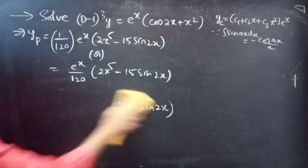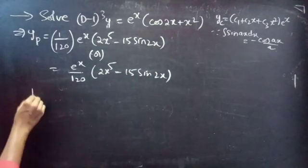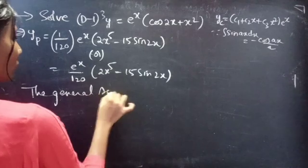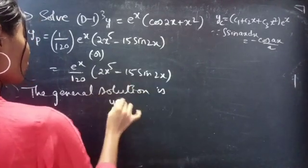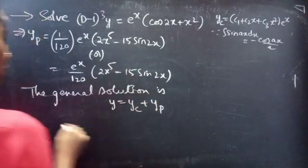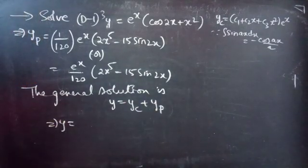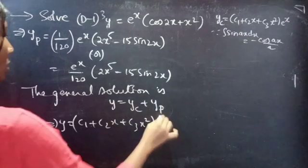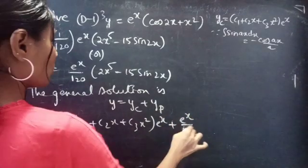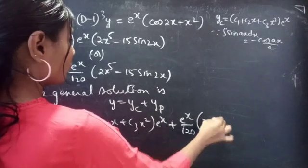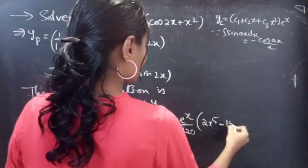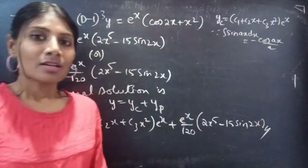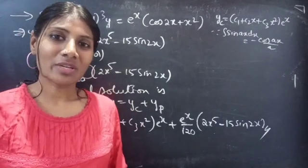Now let's write the general solution. The general solution is given by y equals yc plus yp. We have yc equals (c1 plus c2x plus c3x square) into e power x, and yp equals e power x by 120 into 2x power 5 minus 15 sin 2x. This completes our problem. We have seen a problem from higher order linear differential equations in this video — hope you understand. See you in the next video, bye bye.